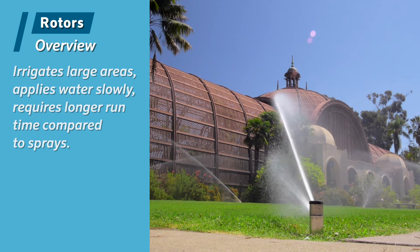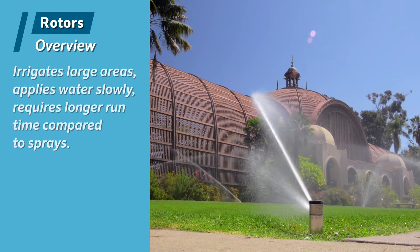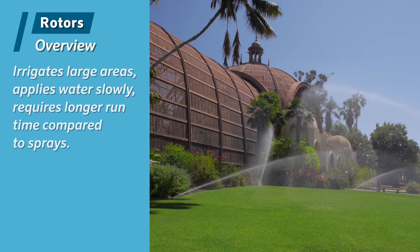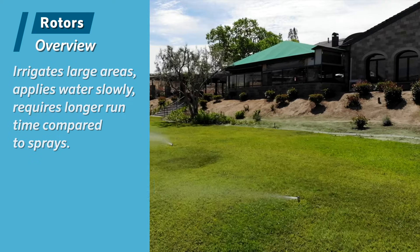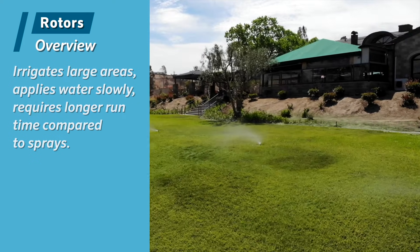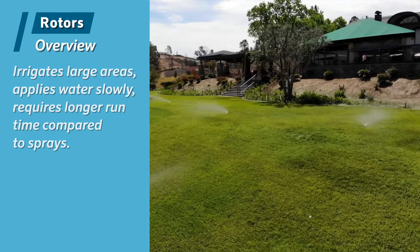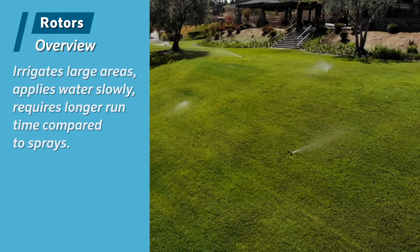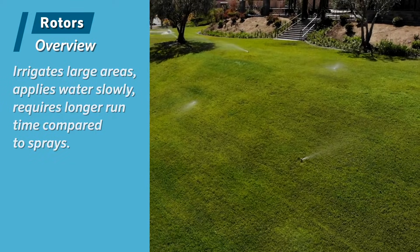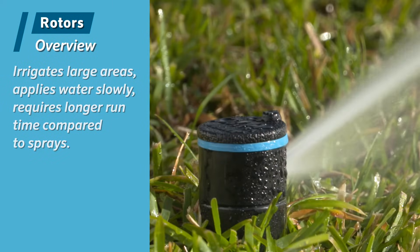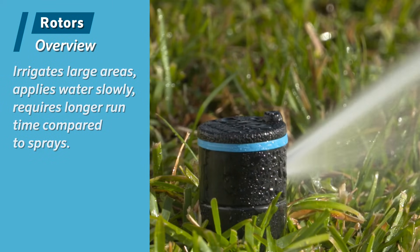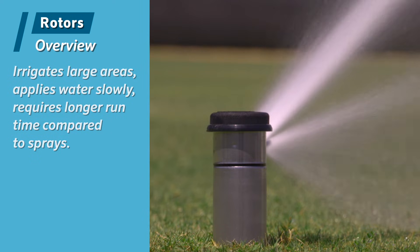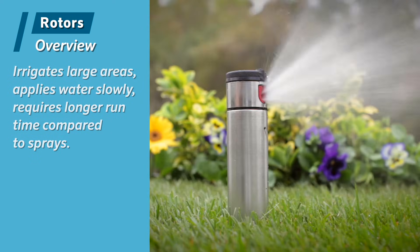Rotors are known to be a large-area type sprinkler and have a radius range from 15 to 103 feet. You will typically use PGJ, PGP, PGP Ultra, or I-20 for these large areas in residential or commercial applications. Rotors apply water very slowly and tend to be considered more efficient than sprays, but will require longer run times to adequately irrigate a given area.